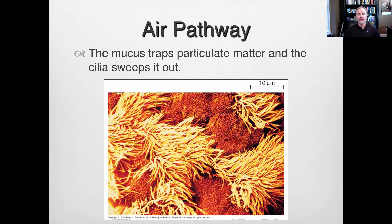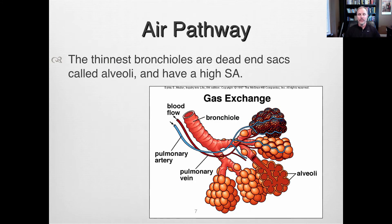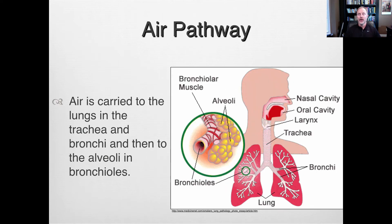The structure-function relationship means not only does the system have really thin membranes bathed in water, but many airways have a ciliated, mucus-lined pathway to help keep us healthy. The thinnest bronchioles end in dead-end sacs — the alveoli — which almost look like a bunch of grapes. They have very high surface area and are encapsulated by capillary beds.